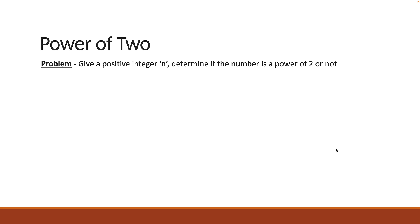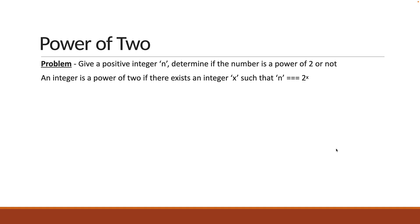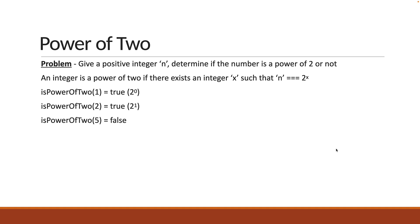In this video, let's take a look at the power of 2 algorithm. Here is the problem statement: given a positive integer n, determine if the number is a power of 2 or not. An integer is a power of 2 if there exists an integer x such that n is equal to 2 power x. For example, isPowerOf2(1) returns true since it equals 2 power 0. Similarly, isPowerOf2(2) returns true since it equals 2 power 1. isPowerOf2(5) returns false since we can't find an integer x that satisfies the equality.